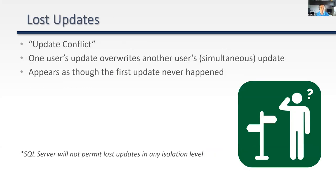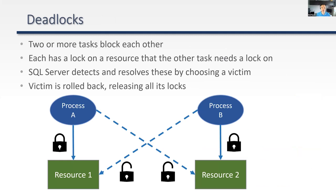There's also the notion of lost updates or update conflicts, where simultaneous updates cause one user's update to overwrite another's. SQL Server does not allow this in any isolation level. If lost updates did occur, it would appear as though the first update never happened — but again, this is not possible in SQL Server. Then we have deadlocks, where two or more processes are blocking each other, each waiting for a lock the other holds. Fortunately, SQL Server can detect deadlocks, choose a victim, and resolve them by rolling back the victim's transaction.